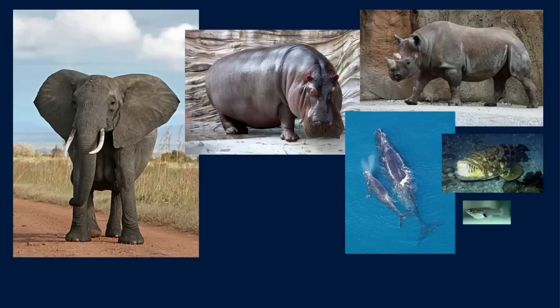Earth's creatures have a size that is proper for the environment in which they inhabit. If Earth's gravity were different, the sizes and proportions of Earth's creatures would correspondingly be different. Nature follows rules, and some of those rules are what we call physics.